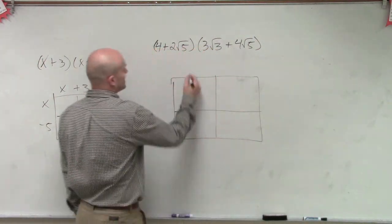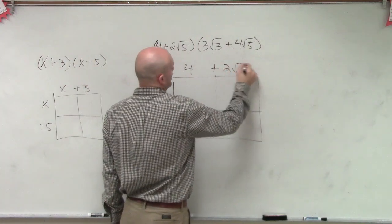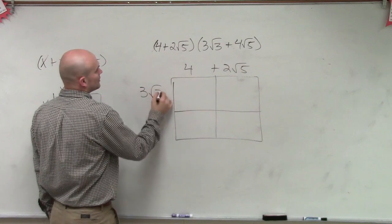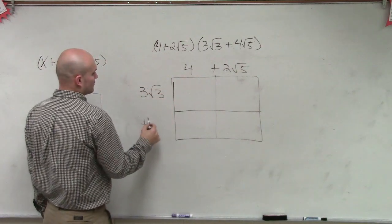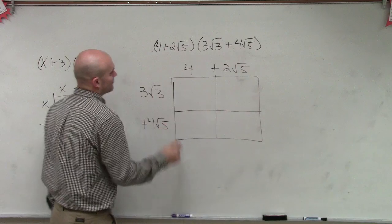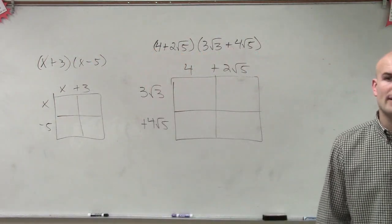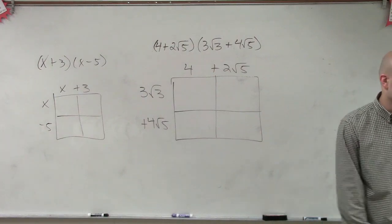So again, you can do (4 + 2√5)(3√3 + 4√5). I'm going to go through this a little bit quicker. If you guys want me to write one out, I'll be more than happy to do it.